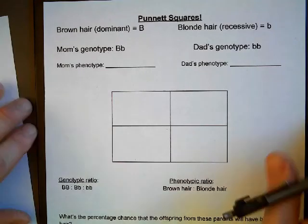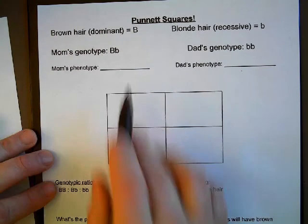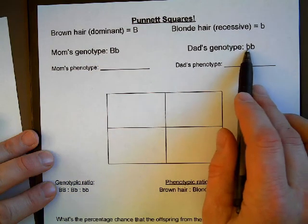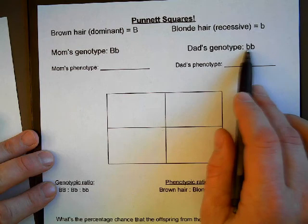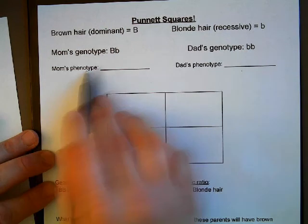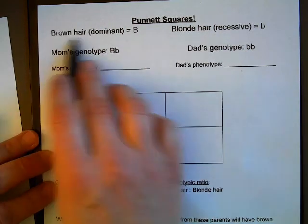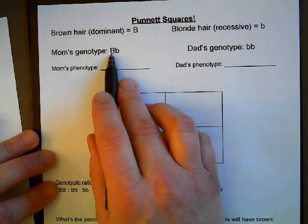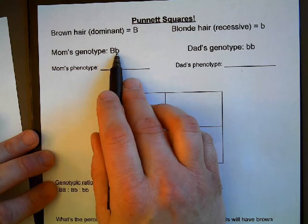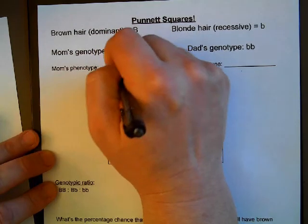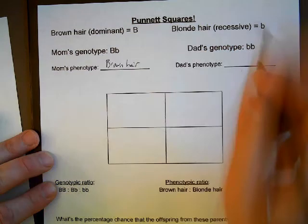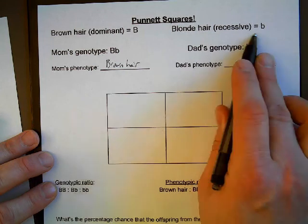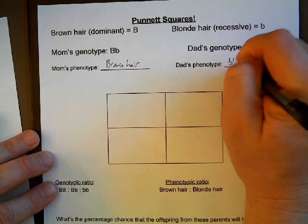Here's one more example. We're going to look at the cross between a mom that is heterozygous — capital B, lowercase b — and a dad that is homozygous recessive — two lowercase b's, or two recessive alleles. We're using hair color again: capital B is dominant for brown hair, lowercase b is recessive for blonde hair. Mom has one dominant allele and one recessive allele, so mom is going to have brown hair. Dad has two recessive alleles, both of which code for blonde hair, so dad's phenotype would be blonde hair.